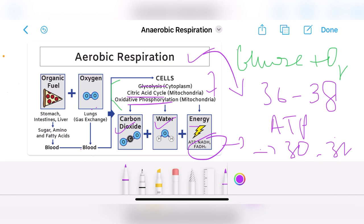But the gain is actually 30 to 32 ATP molecules. Some of the ATP molecules are utilized in some active transport, so the actual gain of ATP is 30 to 32 ATP molecules from the complete breakdown of one glucose molecule.